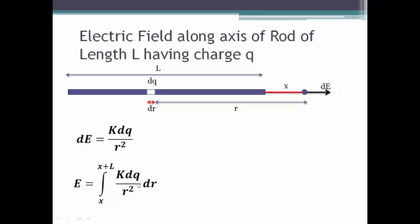dq by r square. Here we have two variables dq and dr, so for the sake of simplicity we will substitute for dq as q by L into dr. Substituting it we get k q by L as the constant we remove it from the sign of integration.